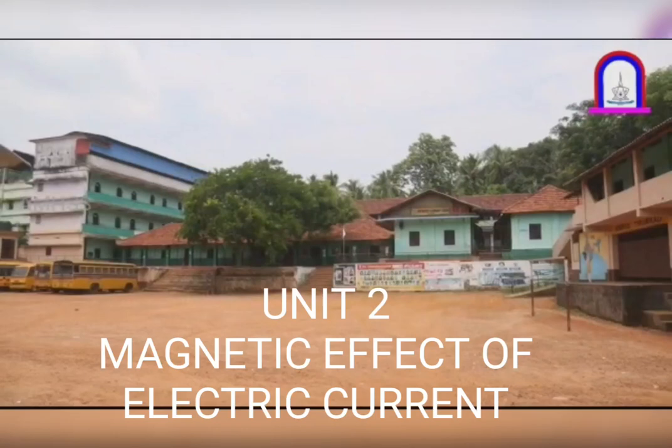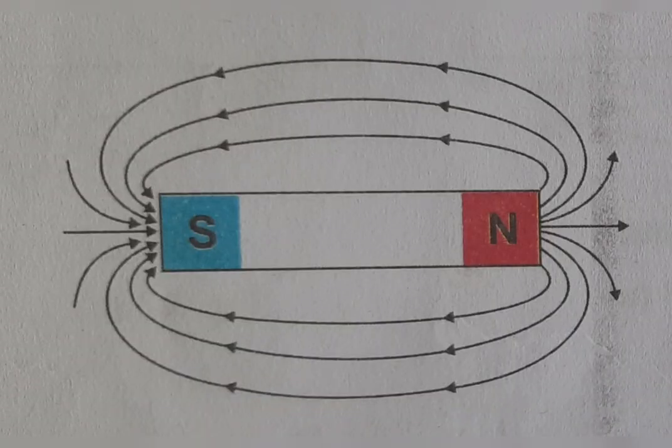Unit 2: Magnetic effect of electric current. In the last class, we studied about the light effect and heat effect of electric current. Now we have the magnetic effect of electric current.